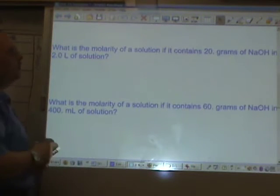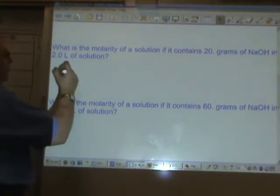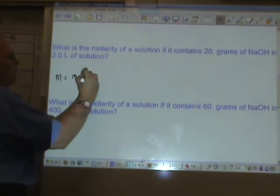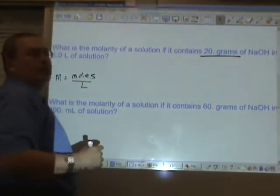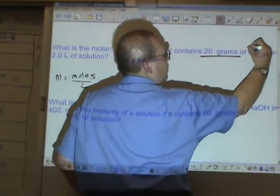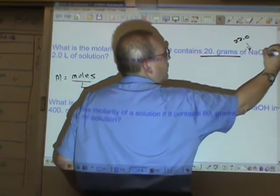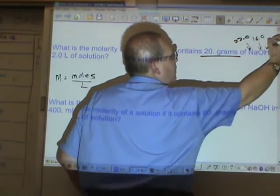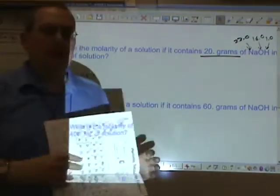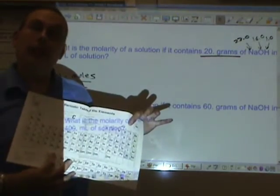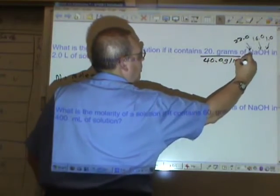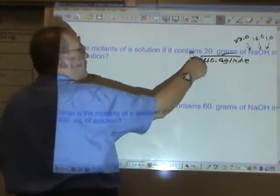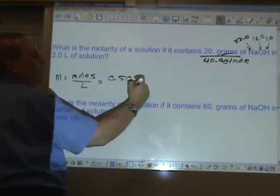What is the molarity of a solution if it contains 20 grams of NaOH in 2.0 liters of solution? Molarity equals moles divided by liters. We have grams. We need to get moles. Na weighs 23.0, O weighs 16.0, H weighs 1.0. Don't believe me? Look it up. That's 40.0 grams per mole. 20 divided by 40, half a mole. 0.50.